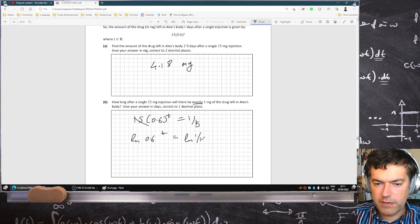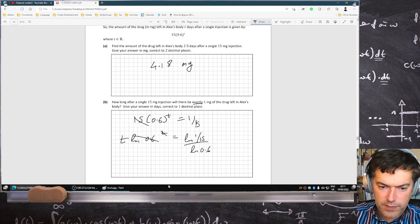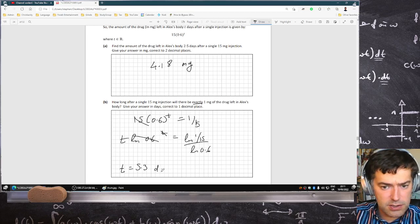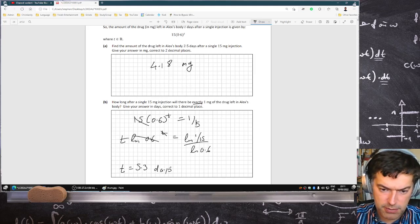Natural log of 1 over 15. t comes down and divide by log 0.6. So that t is 5.3 days. Let's test it out. 15 times 0.6 power 5.3 days is 1.